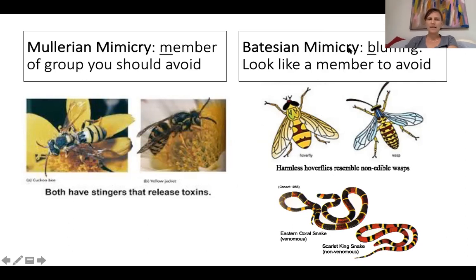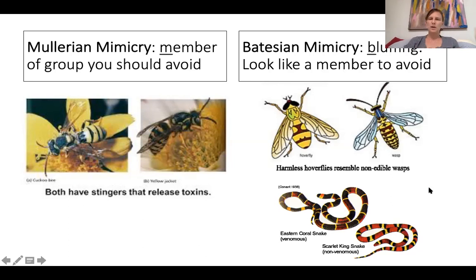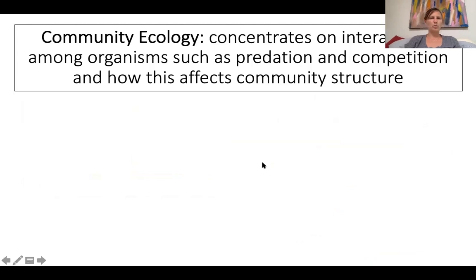A great example of Batesian mimicry are two kinds of snakes: the scarlet king snake, which is non-venomous, and the eastern coral snake, which is venomous. Students have mentioned a jingle for remembering which is which — something about yellow ring, red — please let me know if you know it because there's some sort of jingle that goes with how to remember that.